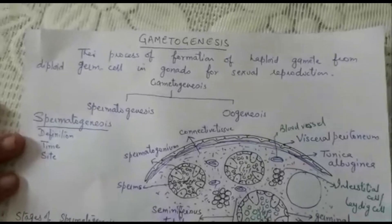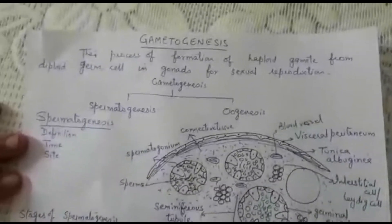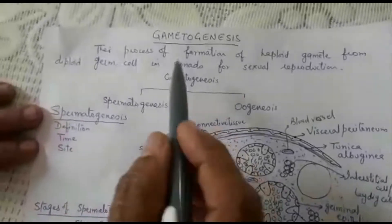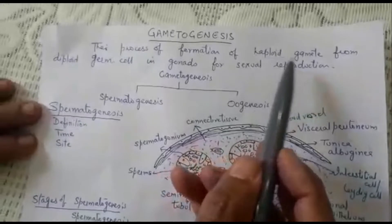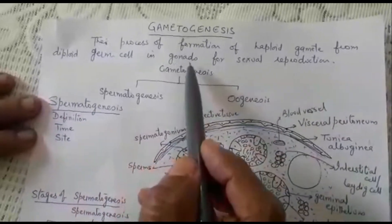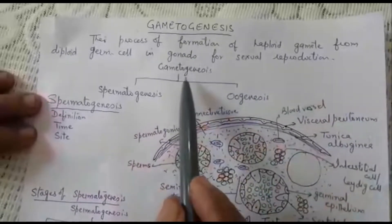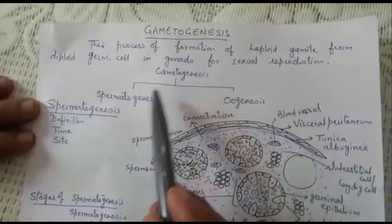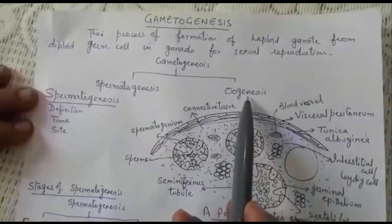Today we will start with the first topic of Unit 1, that is gametogenesis. Gametogenesis is the process of formation of haploid gametes from diploid germ cells in gonads for sexual reproduction. As there are two types of gametes, gametogenesis is also of two types: spermatogenesis and oogenesis.